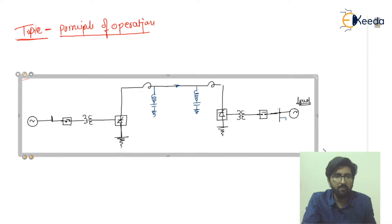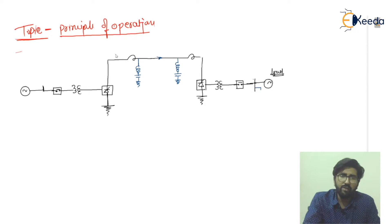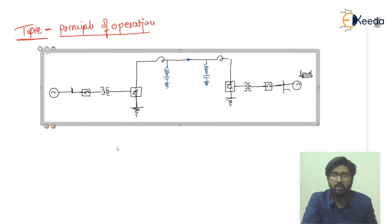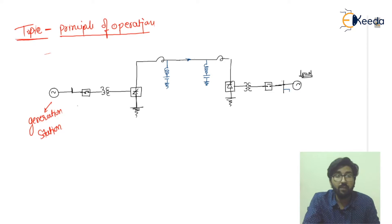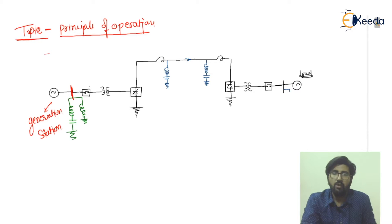I'll start by showing you the diagram in a small version. In this basic fundamental diagram you can see the generating point — the generator station where power is generated in the form of AC. Then there is a bus bar, filters connected to it, and a compensator.